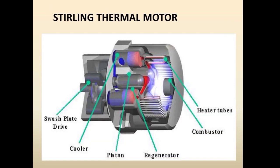The Stirling thermal motor and its parts include: swash plate drive, collar, piston, regenerator, combustor, and heater tubes.